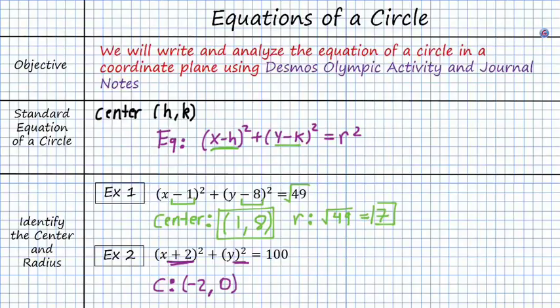There's nothing over here being subtracted or added to y, so that means it's 0. So that's (-2, 0), and my radius is the square root of 100, or we can also say that's 10.